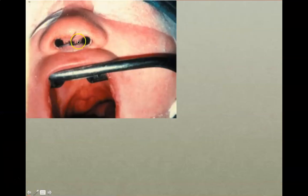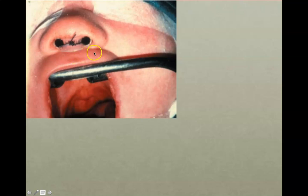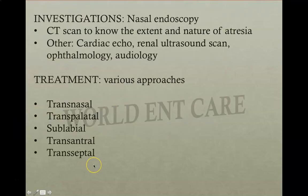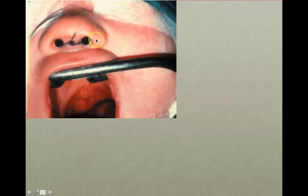In the transnasal approach, we go through the nose to the nasopharynx and remove the atresia. In the transpalatal approach, we go through the palate behind to remove the stenosed part. In the sublabial approach, we make an incision between the lips and gums and proceed toward the nasopharynx. In the trans-antral approach, we go through the maxillary sinus opening toward the atretic part. In the transseptal approach, we elevate the mucosa of the septum and go behind to remove the stenosed part.